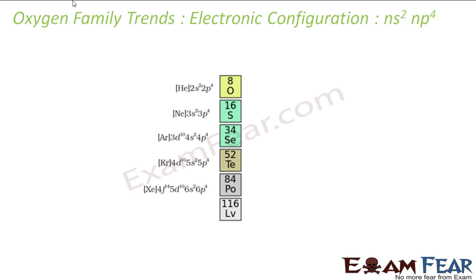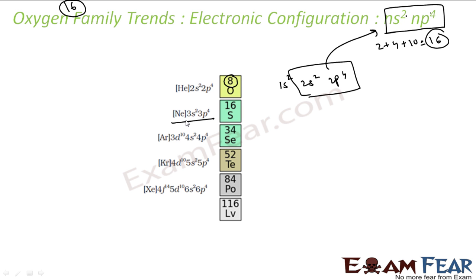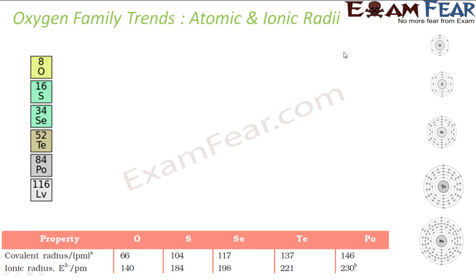Let's start with the electronic configuration. Group 16 elements have the electronic configuration of ns2 np4 — 2 plus 4 is 6, and plus 10 gives the group number, that is group 16. For oxygen (atomic number 8) it is 1s2 2s2 2p4. For sulfur (atomic number 16) it is [Ne] 3s2 3p4. Similarly, for selenium it is 4s2 4p4, for tellurium it is 5s2 5p4, and for polonium it is 6s2 6p4.